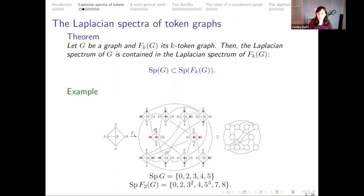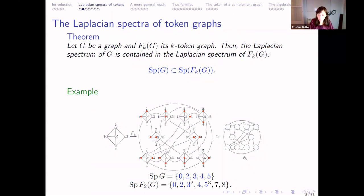Let's come back to the previous example. The Laplacian spectrum of the original graph G is {0, 2, 3, 5, 4, 5}. The Laplacian spectrum of its two-token graph is this other one. I wrote in blue the eigenvalues that coincide. As you can see, the spectrum of G is included in the spectrum of the two-token graph.